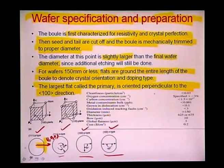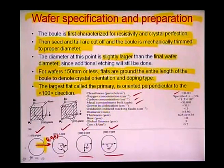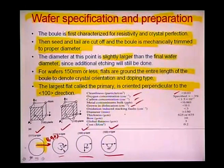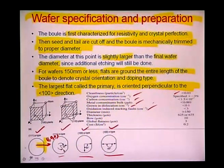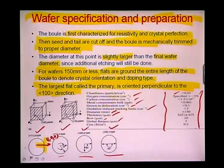Full wafer specifications include: cleanliness in particles per cm², oxygen concentration, carbon and metal contaminants in the bulk in parts per billion, grown-in dislocations per cm² of surface area, oxygen-induced stacking faults, diameter in millimeters, thickness in microns, bow and warping of the wafer, global flatness in micrometers, and cost. These specifications are provided on the characterization data sheet accompanying any new wafer.